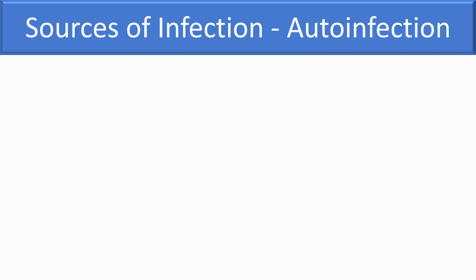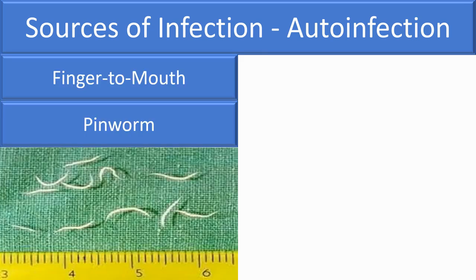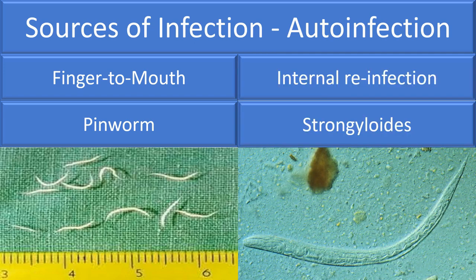Auto-infection is another source of infection. For example, auto-infection with pinworm is common in children. Pinworms migrate to the anal canal at night and cause intense itching; the child scratches the area and eggs and larvae collect under the fingernails. If the child does not follow proper hygiene, the larvae and eggs can be ingested while eating, establishing auto-infection. Another example is internal reinfection, where larvae produced by adult worms penetrate the intestinal wall, re-enter the bloodstream, migrate to the lungs, are coughed up and swallowed, causing reinfection in the host.